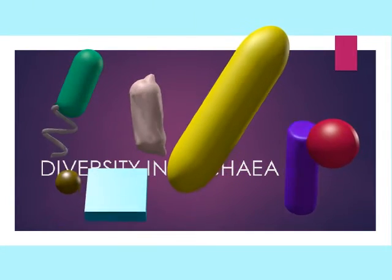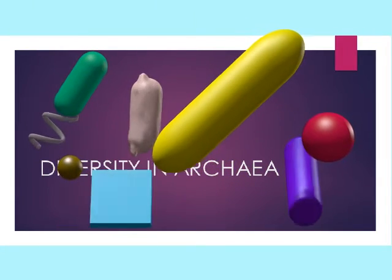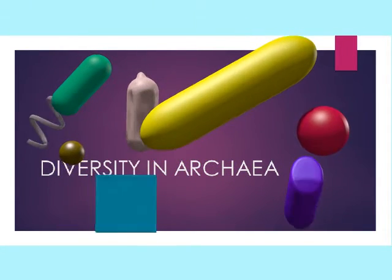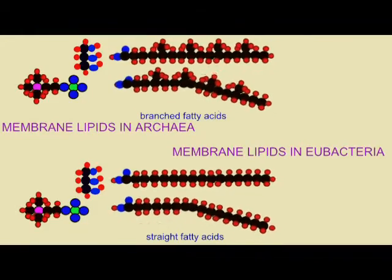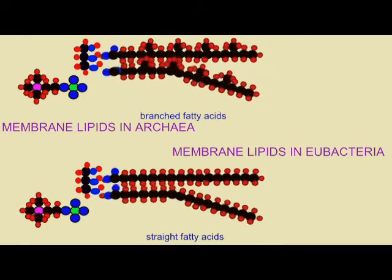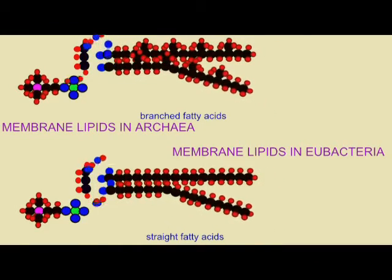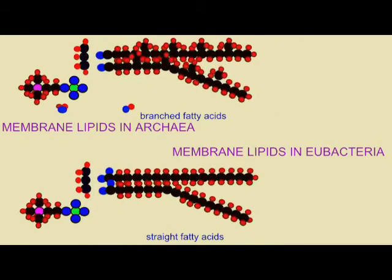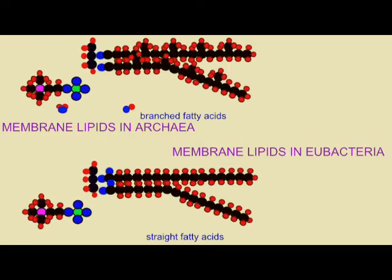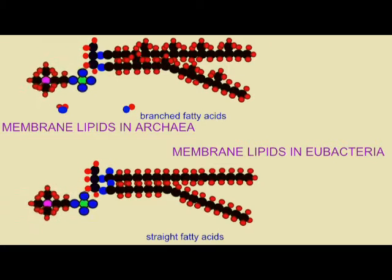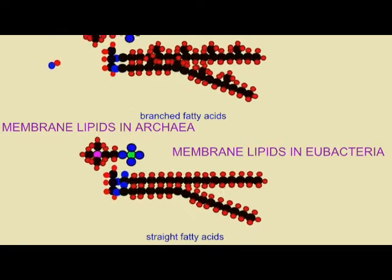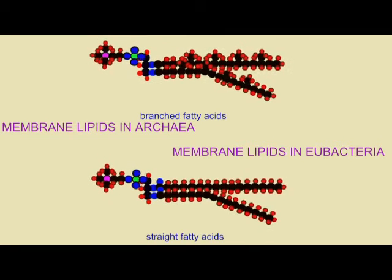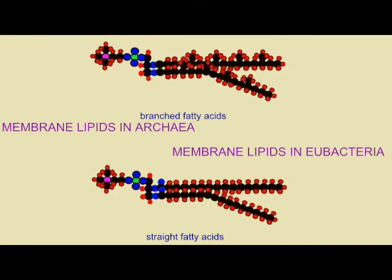Prokaryotic cells are typically much smaller and simpler than eukaryotic cells. They lack a nucleus and internal membrane-bound organelles. Prokaryotic cells are divided into two domains: eubacteria and archaea.